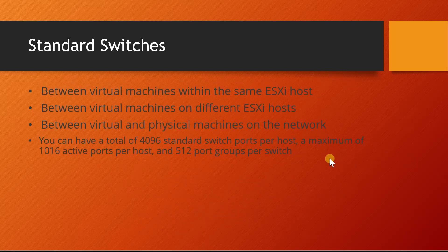A standard switch can be used to communicate between virtual machines within the same host, between virtual machines on different host machines, or between virtual and physical machines on the same network. Communication with physical machines works because the virtual switch is connected to an uplink, which connects to the physical network. In total, you can have 4096 standard switch ports per host, with a maximum of 1016 active ports per host and 512 port groups per switch.